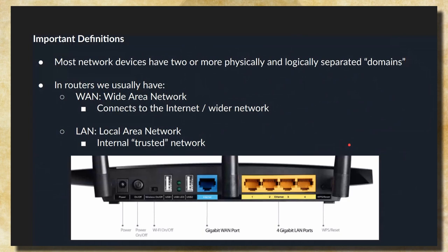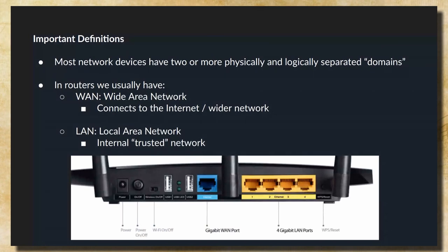Some important definitions: most network devices have two or more physically and logically separated domains. Taking the example of a router — we usually have two domains: the WAN (wide area network), which connects to the internet or a wider outside network, and the LAN (local area network), which is an internal trusted network. These interfaces are physically separated, not only logically, and they have different trust boundaries. Obviously the LAN is going to be more trusted than the WAN.